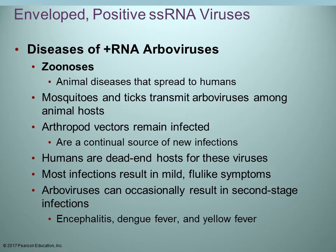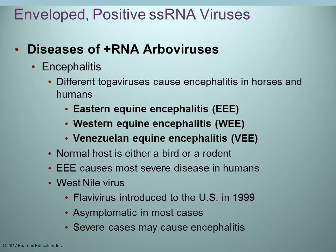Infections tend to be mild flu-like symptoms in most cases. Arboviruses can sometimes result in secondary infections, which are more serious: encephalitis, dengue fever, or yellow fever. Several different togaviruses can cause encephalitis in both horses and humans — that's why the name 'equine' is associated: Eastern equine encephalitis, Western equine encephalitis, and Venezuelan equine encephalitis.